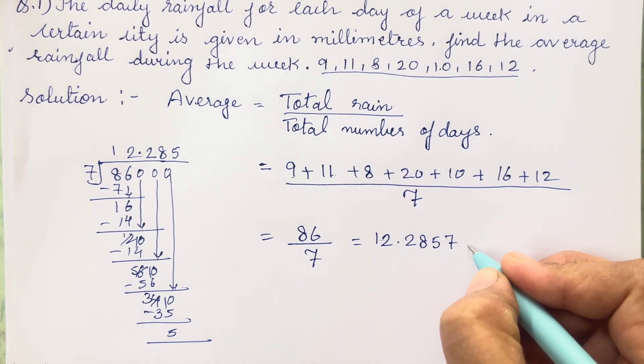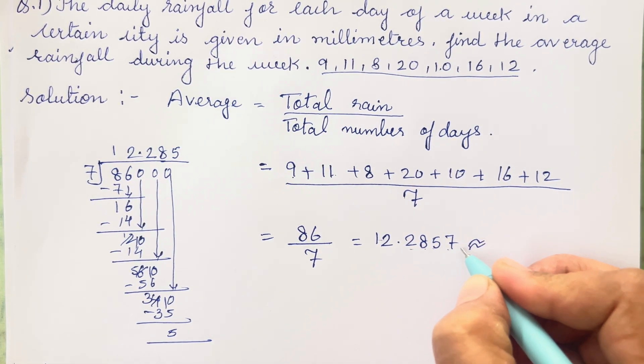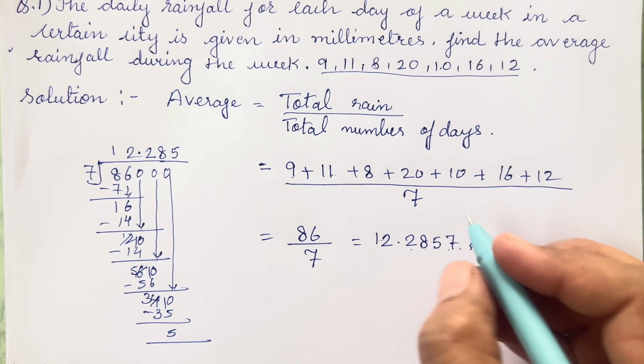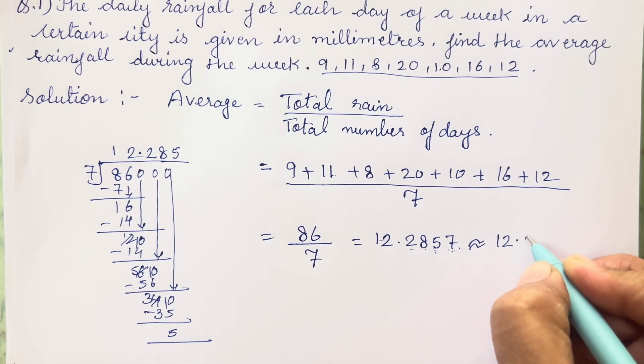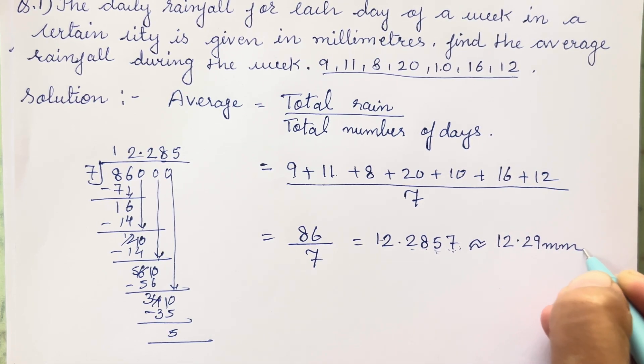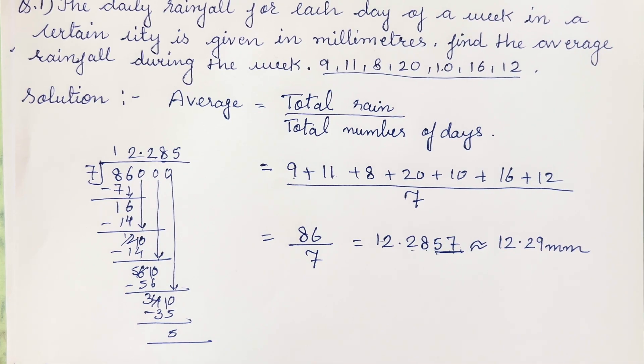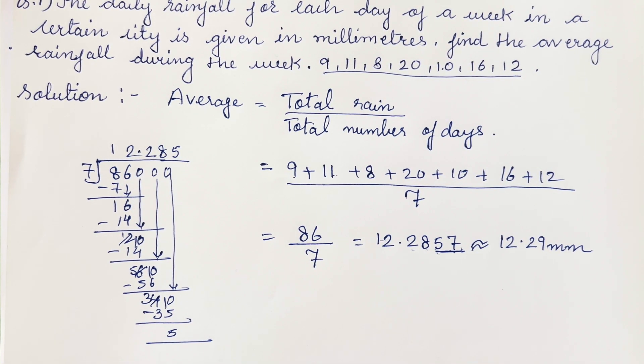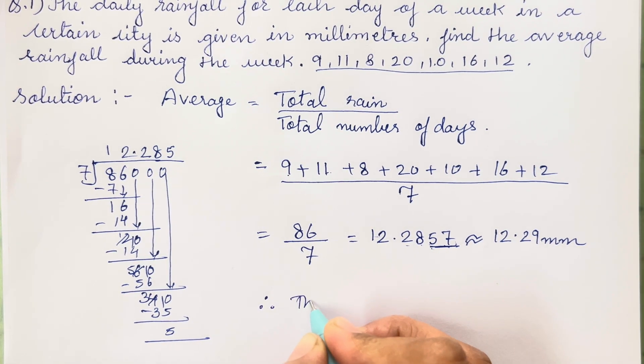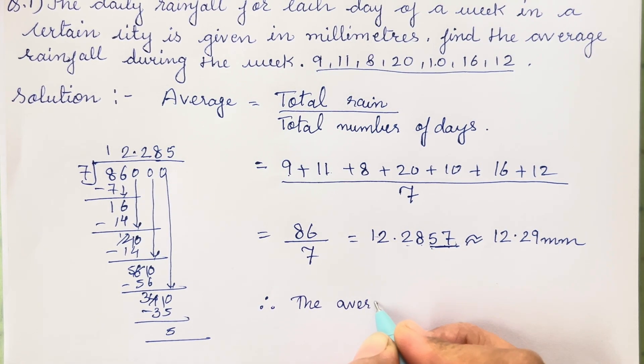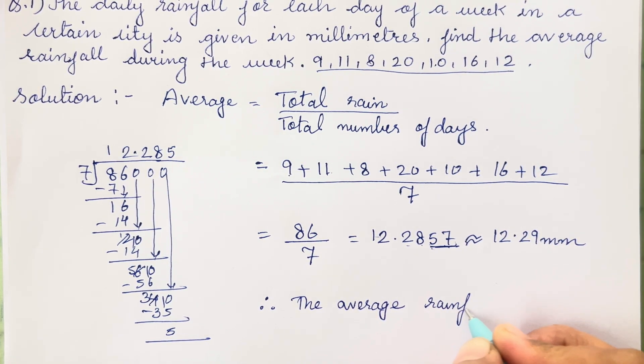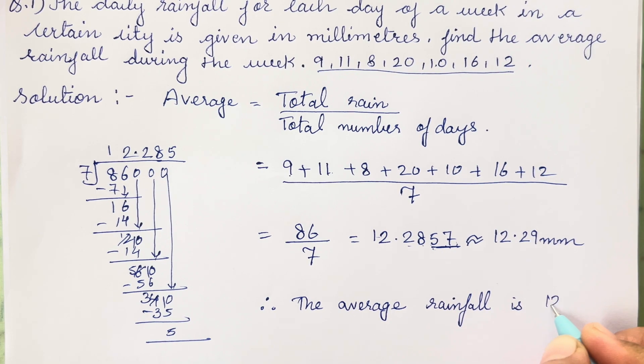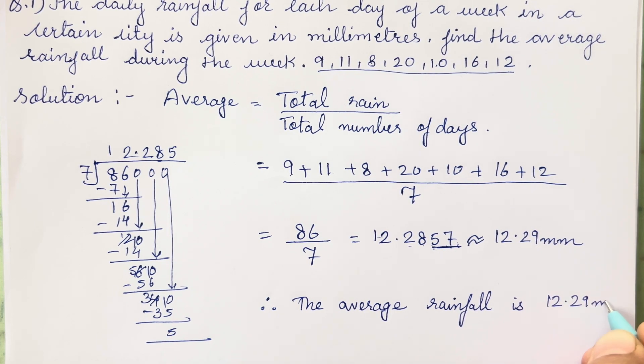Once you get this answer whether it is 2 digit or 3 digit or 4 digit you all have to approximate. Now over here it is more than 50, so this will be 12.29 millimeter. Therefore the average rainfall is 12.29 millimeter.